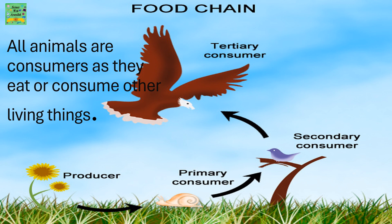All animals are consumers as they eat or consume other living things. The producer is a plant. The primary consumer is the one that eats the plant only. The secondary consumer eats the animal, or the primary consumer. The tertiary consumer eats the secondary consumer.